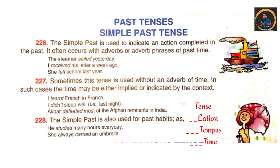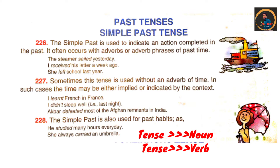Tense is used in two different grammatical structures. Tense can be used as a noun as well as a verb. When we use tense as a verb, it shows a state — for example, 'I am tense today' or 'My friend is tense.' But if we use tense as a noun, it shows a time.